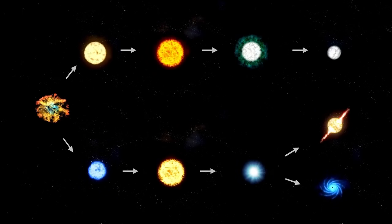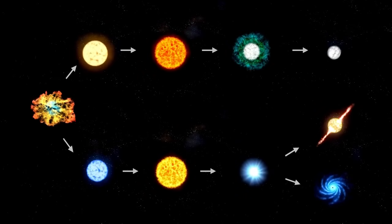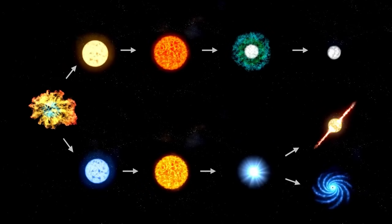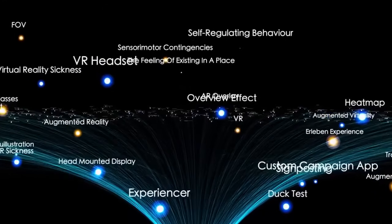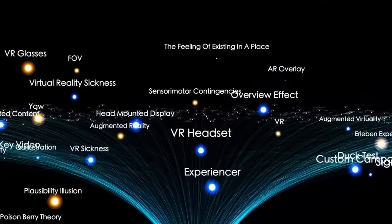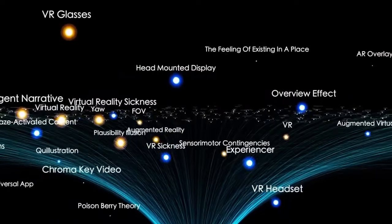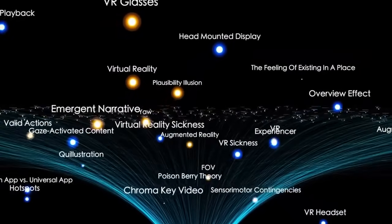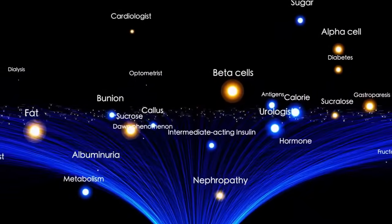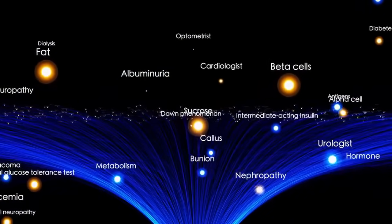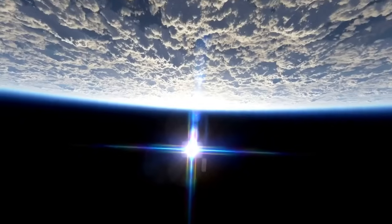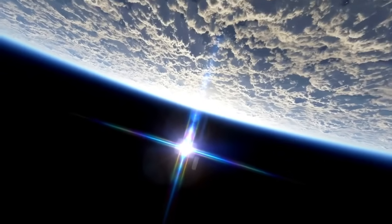Antares is also a variable star, meaning that it undergoes changes in brightness over time, just like Betelgeuse. In addition, Antares has a mass approximately 12 times that of the sun and a radius that is 700 times that of the sun. So it's safe to say that Antares is no slouch in terms of size.